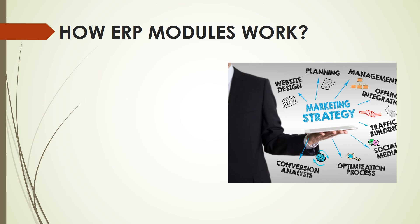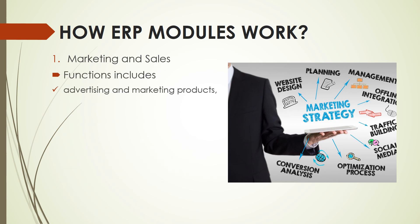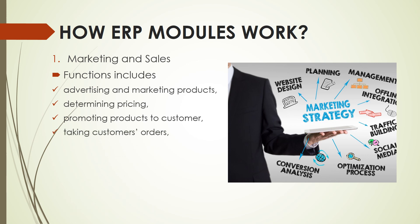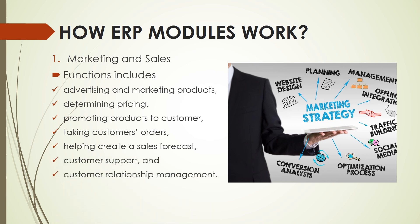So, how do ERP modules work? We have eight different functions wherein you can see how modules work when we integrate or utilize enterprise resource planning software. For the marketing and sales function, functions include advertising and marketing products, determining pricing, promoting products to customers, taking customer orders, helping create a sales forecast, customer support, and customer relationship management. These functions are included in the marketing and sales module of an enterprise resource planning system.